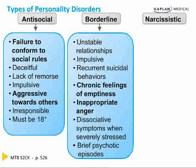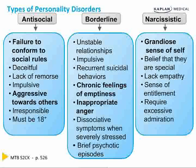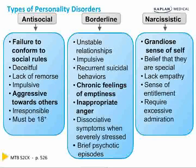Narcissistic personality disorder is pretty easy to diagnose — of all the cluster B disorders, it's the easiest. It's that grandiose sense of self, belief that they're super special, lack of empathy for others, a sense of entitlement, and a need for excessive admiration. Narcissistic is least likely to appear on the test because it's quite simple, especially compared to antisocial and borderline.